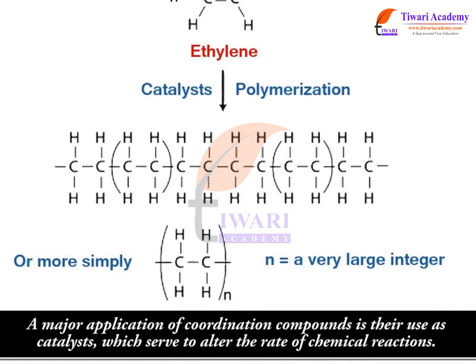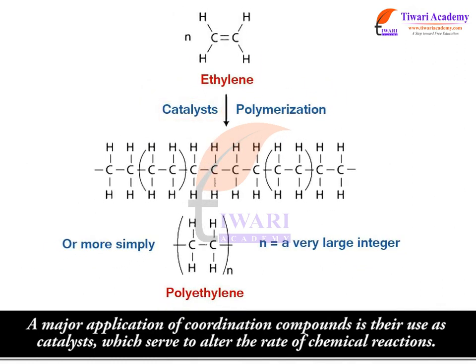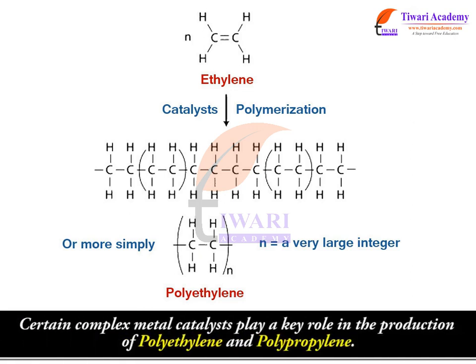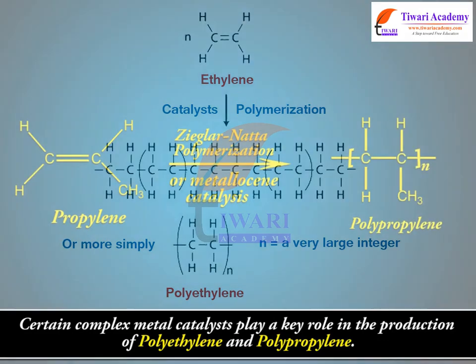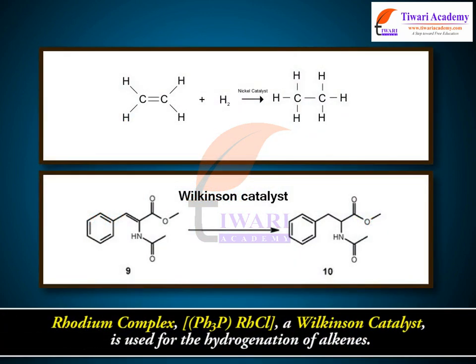A major application of coordination compounds is their use as catalysts, which serve to alter the rate of chemical reactions. Certain complex metal catalysts play a key role in the production of polyethylene and polypropylene. The rhodium complex PH3P-RhCl, a Wilkinson catalyst, is used for the hydrogenation of alkenes.